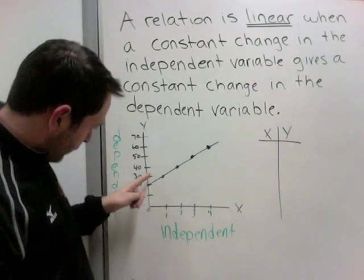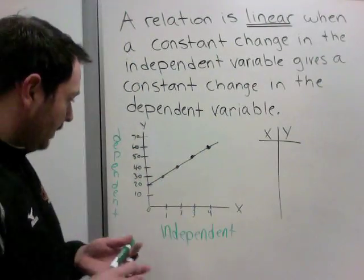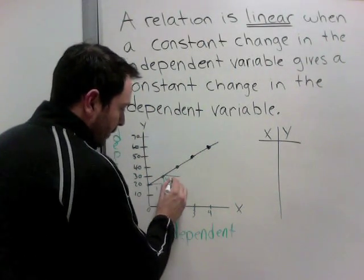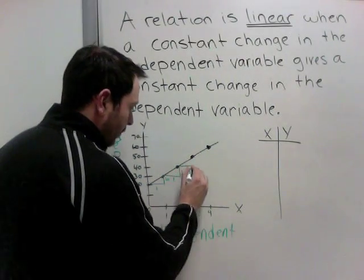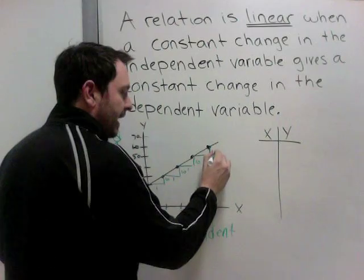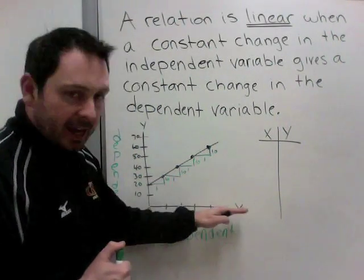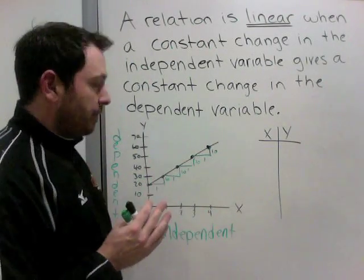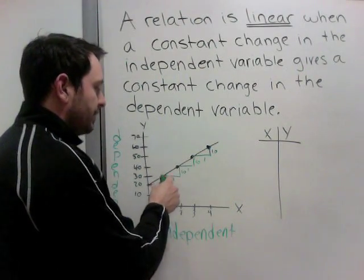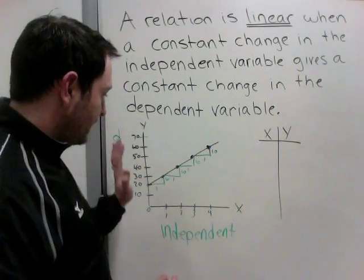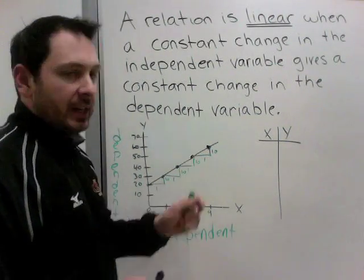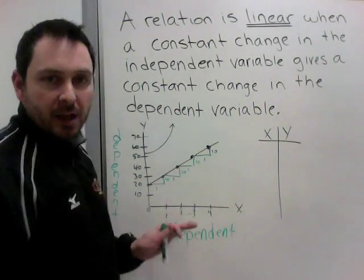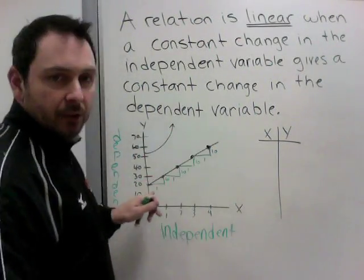The dependent variable went from 20 to 30 to 40 to 50. So to check: the independent variable went up 1 each time, and the dependent went up 10 each time. Are the constant changes in x giving constant changes in y? The independents were 1, 1, 1, 1 — constant. And the dependents were up 10, up 10, up 10, up 10 — also constant. So this is a linear relation. When it's a graph, if it is a straight line, it is linear. A curve would not be linear. A straight line represents linearity.